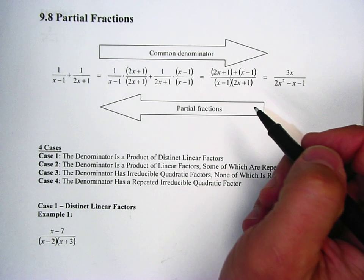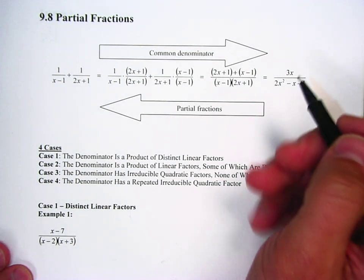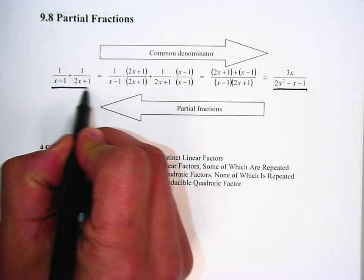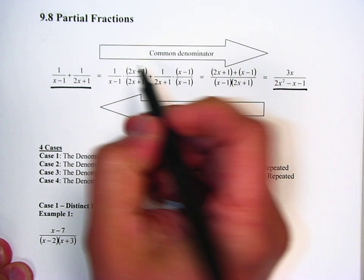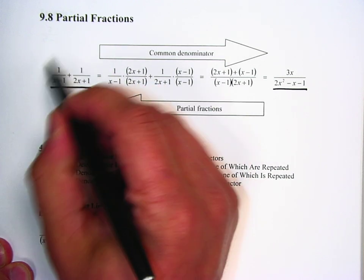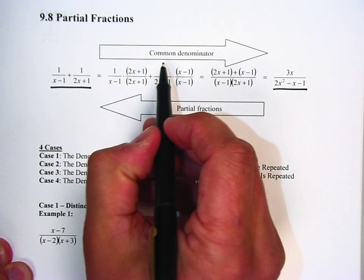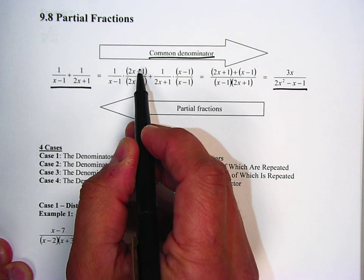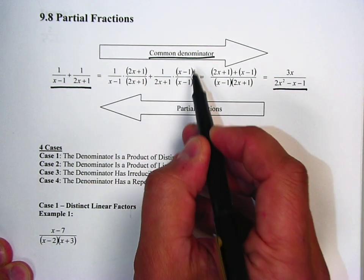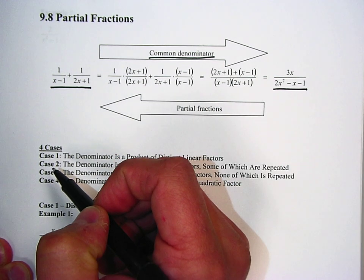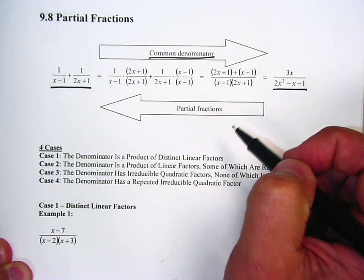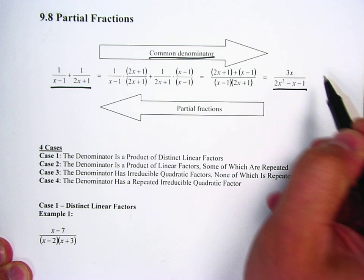Basically what we're going to be doing is working backwards from a completed fraction like this into parts like this. Now if we were to go ahead and add these two fractions together, we would have to get common denominators. You would multiply both terms by the common denominator, the part that's missing, giving us some good stuff there, and then we multiply it all together, simplify it, and we get to here.